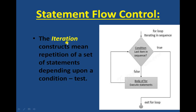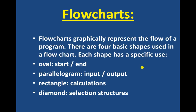Next is iteration in statement flow control. The iteration construct means repetition of a set of statements depending upon a condition or test. Here, a for loop iterates over a sequence. If the condition — last item in sequence — is false, then the body of the loop executes the statements. When the condition becomes false, it exits the loop.